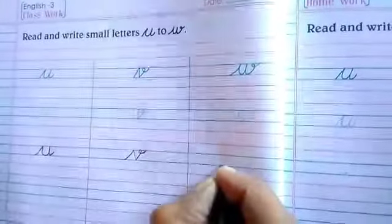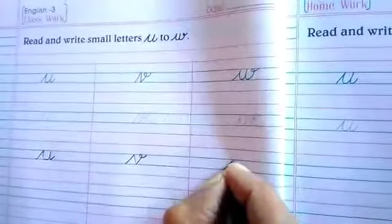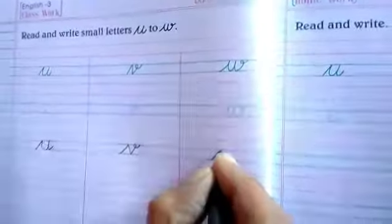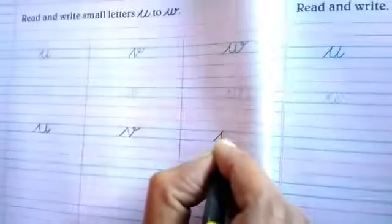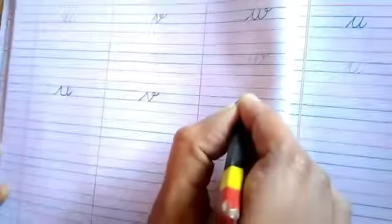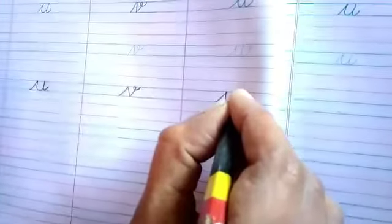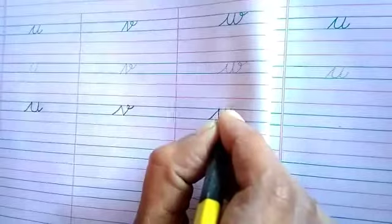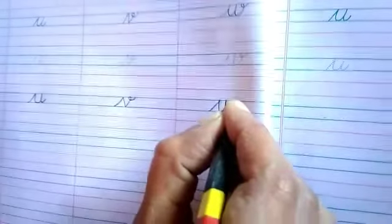For letter W: make a small slanting line from the third line to the second line, again a curve line, one more curve, and make a small circle inside. This is letter W.